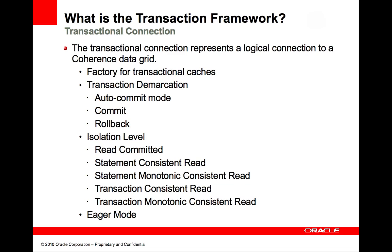In non-autocommit mode, the transaction may span multiple operations and must be explicitly ended with either a commit or rollback call. The transactional connection also allows you to set an isolation level. Read committed is the default isolation level. This isolation level guarantees that only committed data is visible and doesn't provide any consistency guarantees. This is the weakest of the isolation levels and will generally be the most performant at the cost of read consistency.